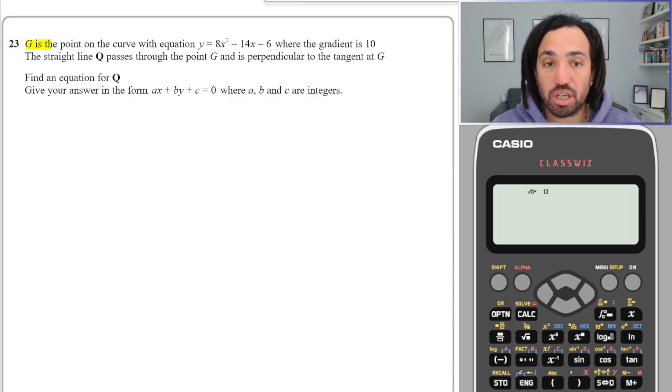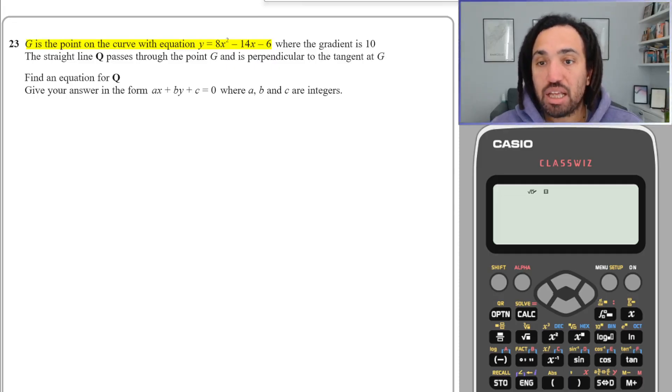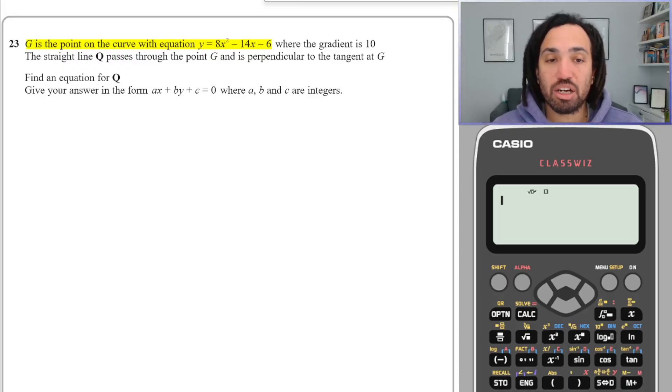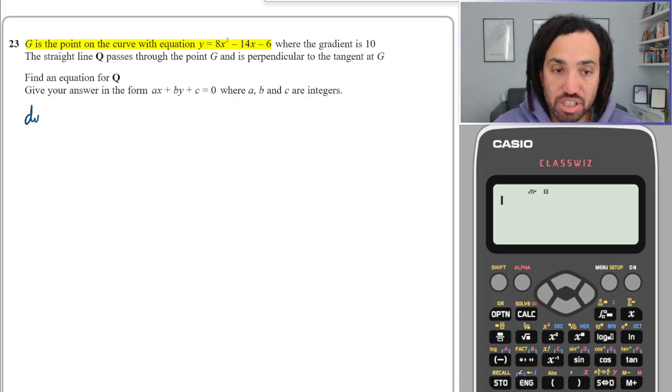G is the point on the curve with equation y = 8x² - 14x - 6, a quadratic, where the gradient is 10. Now how do we find the gradient of a curve? That is differentiation, so we're going to have to find the gradient function dy/dx by differentiating.